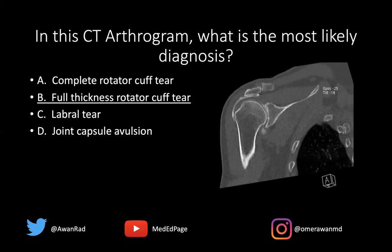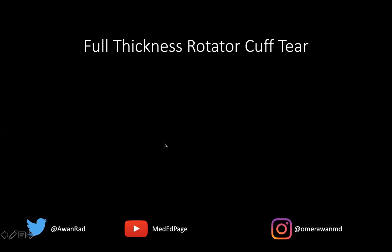Now, this is not necessarily a complete tear, because a complete tear is a full thickness full width tear. This is a full thickness tear, but not necessarily a full width tear. We don't have a sagittal image to assess whether this is a full width tear, so we can only be confident that this is a full thickness rotator cuff tear.